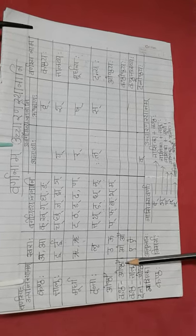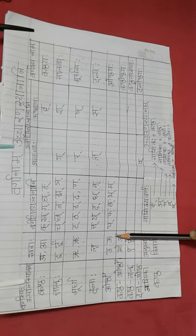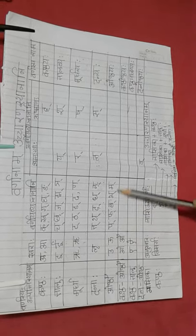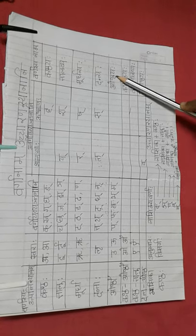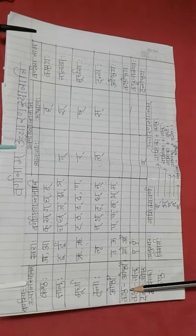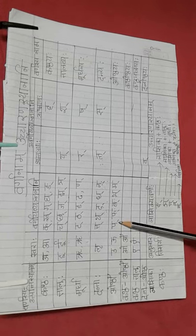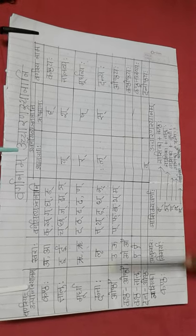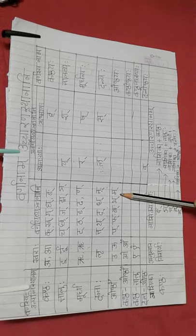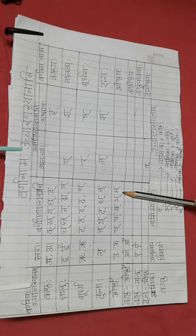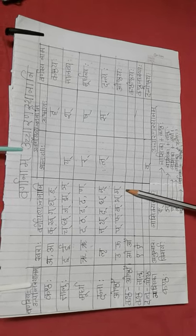Ooshtha — lips. O, oo. Pa, fa, ba, ba, ma. Ooshtha ya ha. Our lips are needed to pronounce this varna — ooshtha ha. Ma, bha — see.